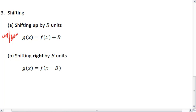When we're looking at up-down shifting, the way to shift up or down is to add or subtract a value to all of our outputs.